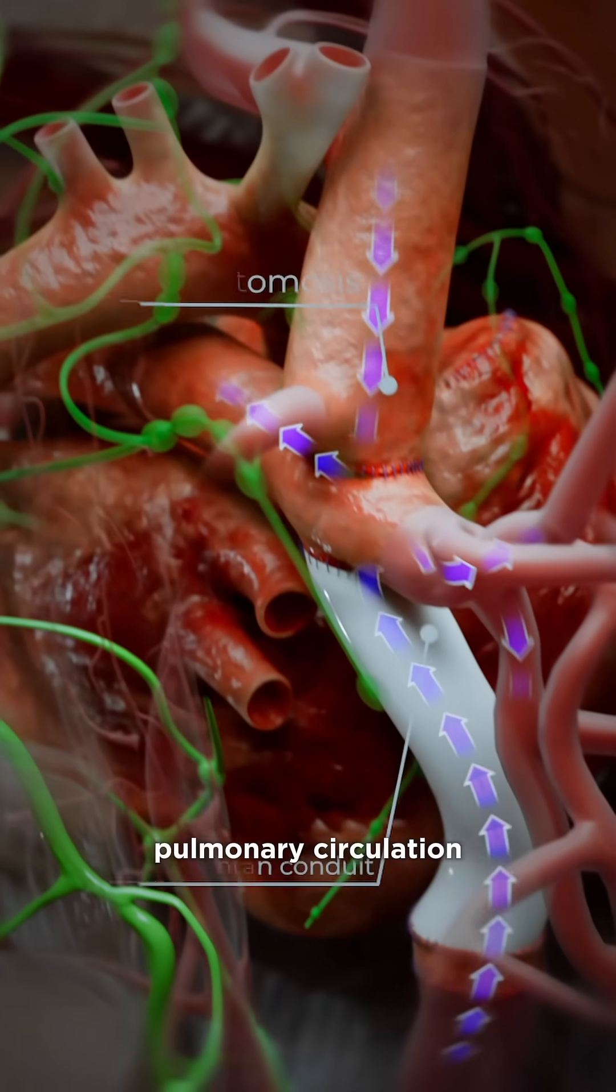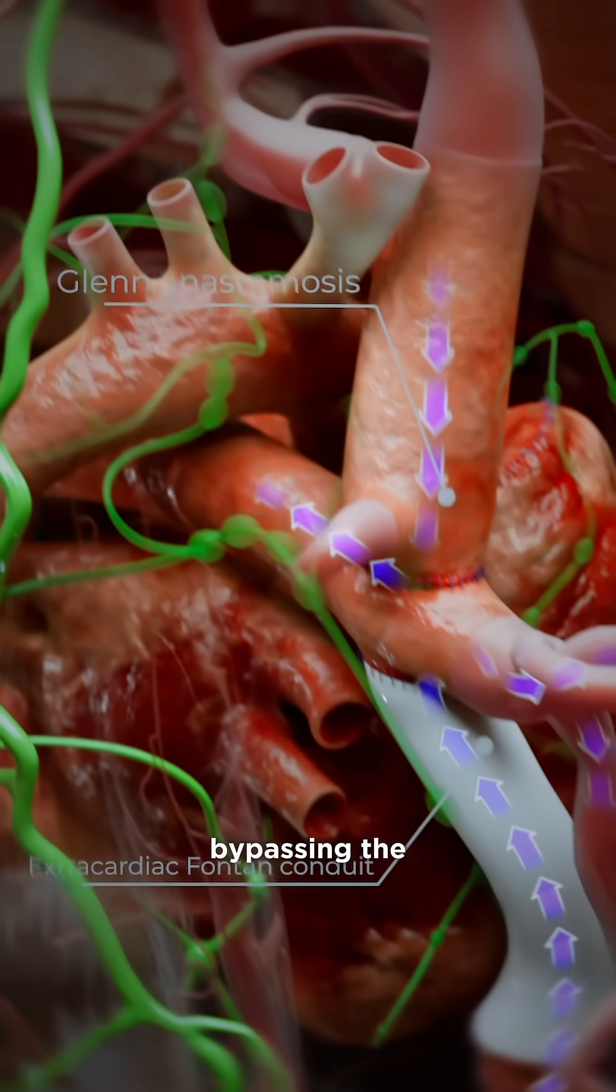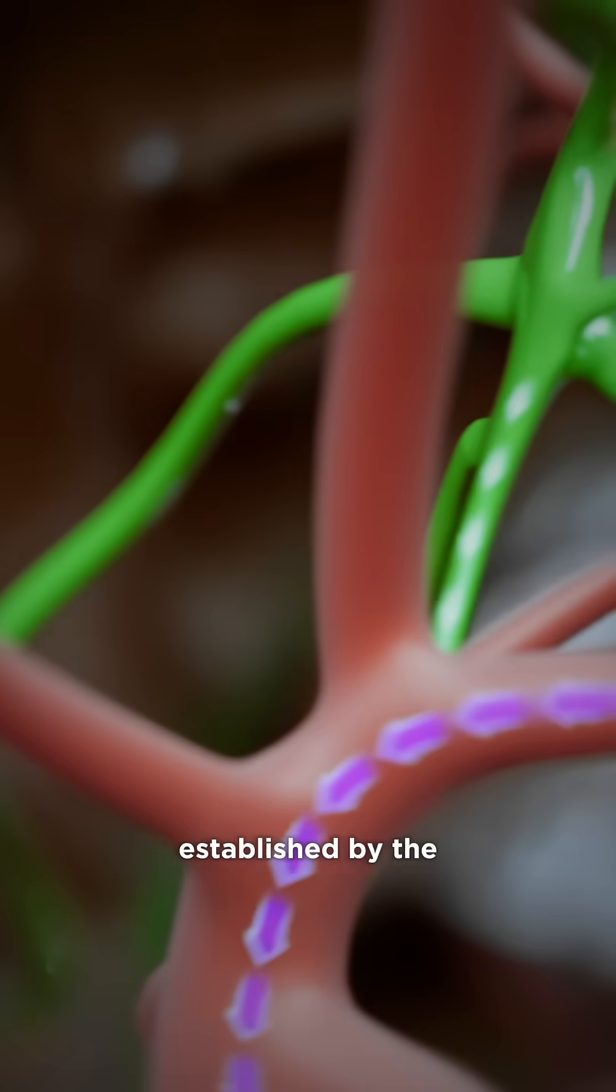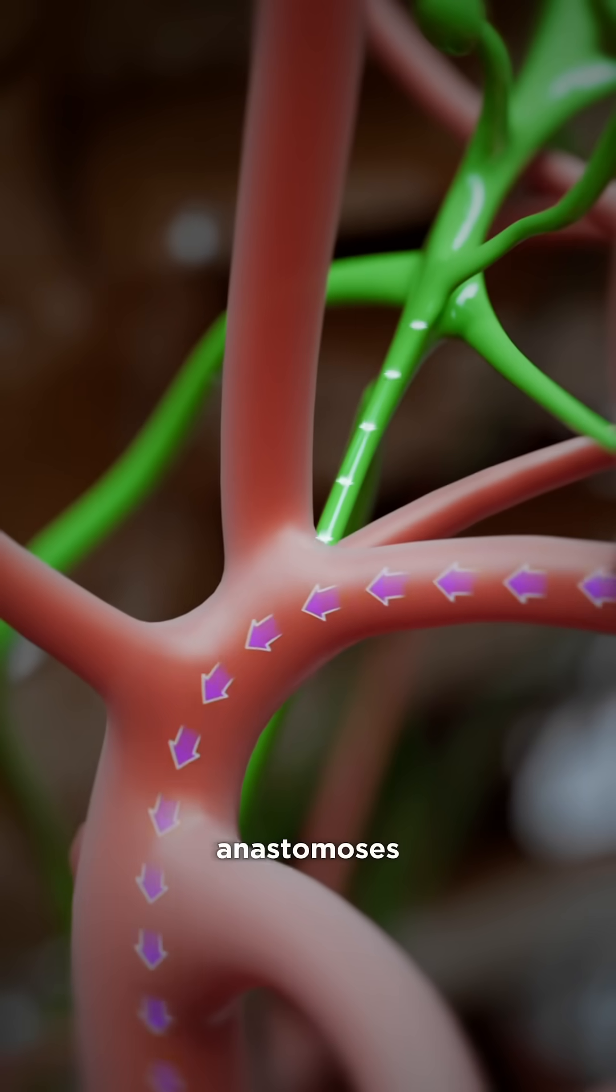Venous return to the pulmonary circulation occurs passively, bypassing the right ventricle and its pump function through cavopulmonary connections established by the Glenn and Fontan anastomosis.